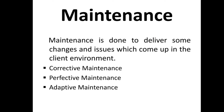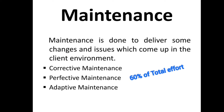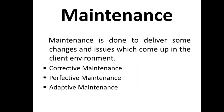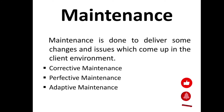Then comes the crucial part: maintenance. Maintenance is the most important phase of a software life cycle — the effort spent on maintenance is about 60% of the total effort spent to develop a full software. There are basically three types of maintenance. Corrective maintenance is carried out to correct errors that were not discovered during the product development phase. Perfective maintenance is carried out to enhance the functionalities of the system based on the customer's request. And adaptive maintenance is usually required for porting the software to work in a new environment, such as a new computer platform or a new operating system.